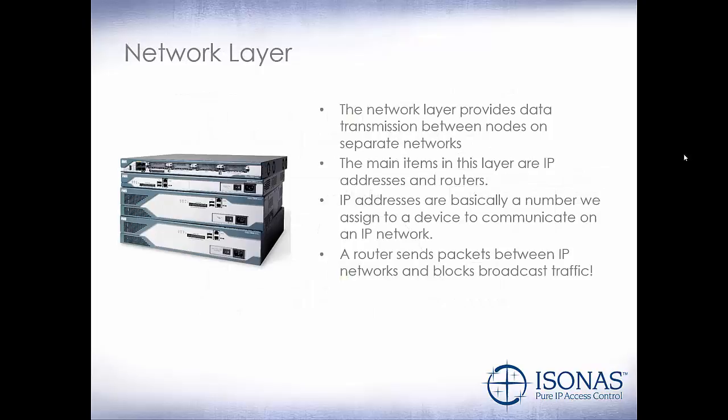Now let's move to layer 3, the network layer. The network layer provides data transmission between nodes on separate networks — we just can't have one gigantic network with everything communicating on it. The main items in this layer are IP addresses and routers. IP addresses are basically a number we assign to a device to communicate on an IP network. A router sends packets between IP networks and blocks broadcast traffic. So when a device broadcasts looking for something and that broadcast hits a router, the router stops it dead. If you have multiple networks with our plug-and-play application, and you're on network A but there are PowerNets on network D, the broadcast won't be able to see them.